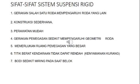Sifat-sifat sistem suspensi rigid: yang pertama, gerakan salah satu roda mempengaruhi roda yang lain. Yang kedua, konstruksi sederhana. Yang ketiga, perawatan mudah. Yang keempat, gerakan pemegasan sedikit mempengaruhi geometri roda. Yang kelima, memerlukan ruang pemegasan yang besar. Yang keenam, titik berat kendaraan tidak dapat rendah sehingga kenyamanan akan berkurang. Yang ketiga, bodi sedikit miring pada saat berbelok.